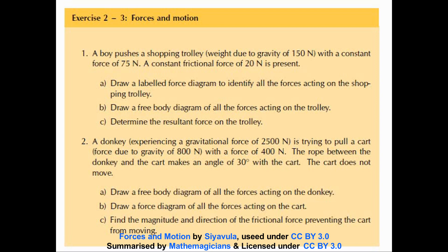Question two: a donkey experiencing a gravitational force of 2,500 Newtons is trying to pull a cart with a force due to gravity of 800 Newtons, with a force of 400 Newtons. The rope between the donkey and the cart makes an angle of 60 degrees to the cart. The cart does not move.